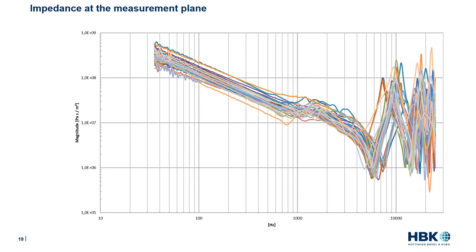In this graph, the impedance at the measurement plane is shown for all 32 subjects. In the raw measurement results, a significant variability in impedance across subjects is noted, especially at frequencies above 3 to 4 kHz where resonances and anti-resonances occur. This variability is due to the variable path length between the measurement plane in the ear canal and the eardrum, and to the large intra-subject variation in ear canal geometries, as well as what goes on in the middle ear.